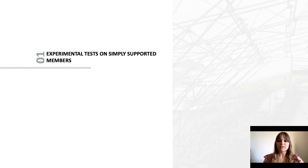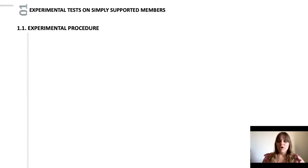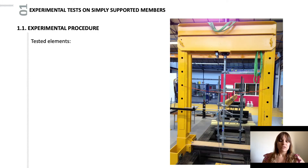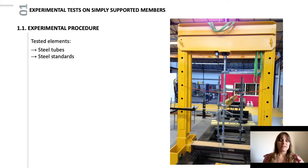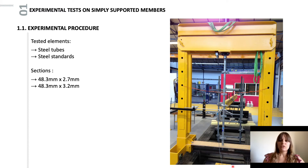Let's move on to the first part, dealing with the simply supported models. The tests on simply supported elements were carried out on two types of elements. The first was simply steel tubes, and the second was steel scaffolding standards. For each of these two elements, two cross-sectional areas were tested. In all cases, the height of the tested elements is 2 meters.